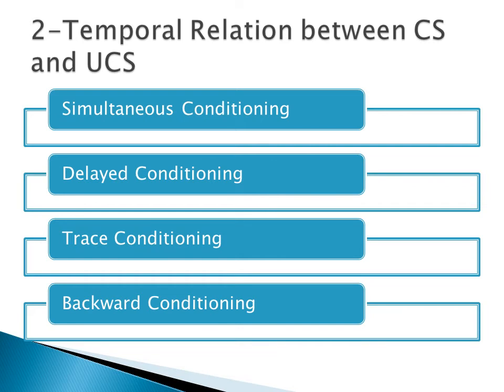The second phenomenon is the temporal relation between the conditioned stimulus and the unconditioned stimulus. Psychologists have systematically manipulated the time interval between them. It has been reported that an interval of half a second between the conditioned stimulus and the unconditioned stimulus produces the greatest amount of conditioning. If the time interval is shorter, particularly if it is negative so that the unconditioned stimulus follows the conditioned stimulus, a dramatic failure of conditioning occurs. There should be no delayed conditioning or backward conditioning — the interval of half a second produces the greatest amount of conditioning.